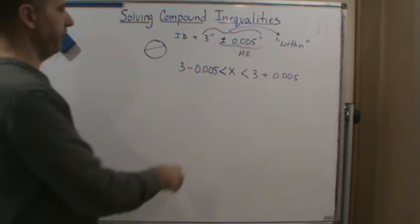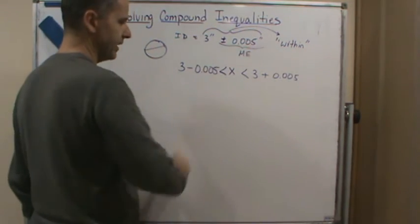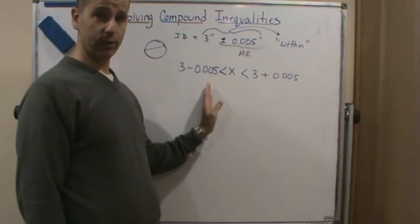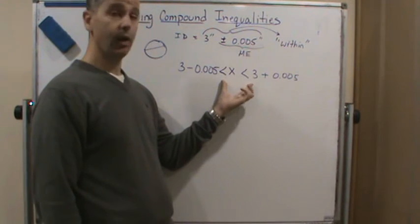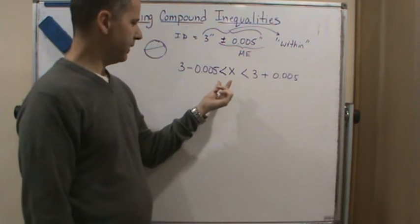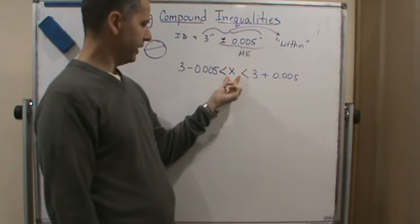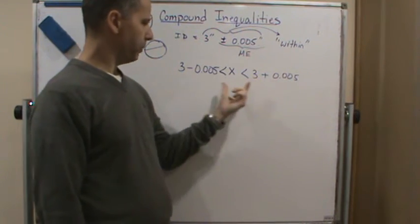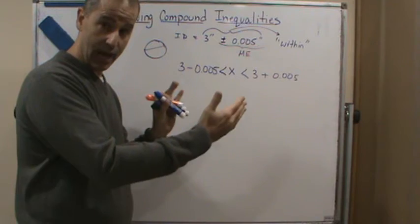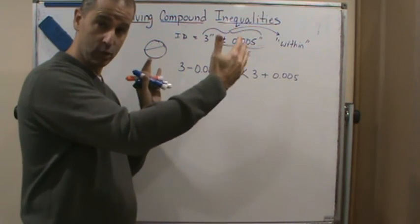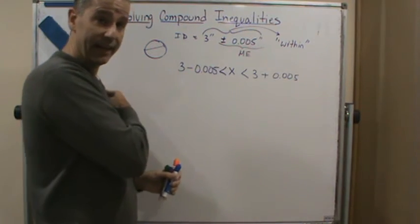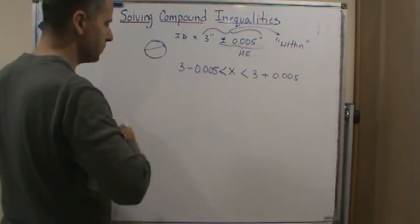So this translates into this type of inequality, and this is a compound inequality because it involves more than one inequality symbol. So this means that x is greater than this but less than this, and that is the range of tolerance. That's what we mean to be within tolerance, to be anywhere within that interval.